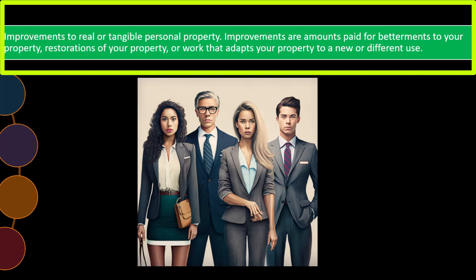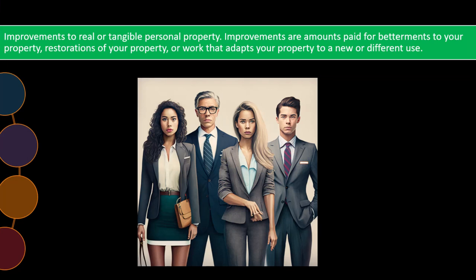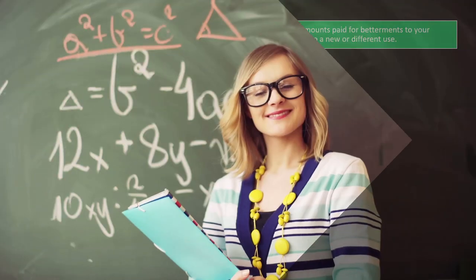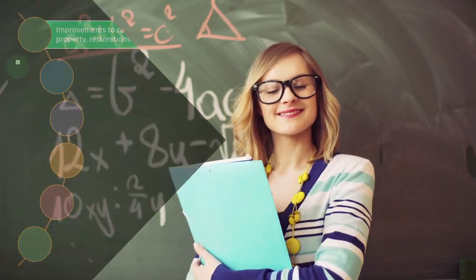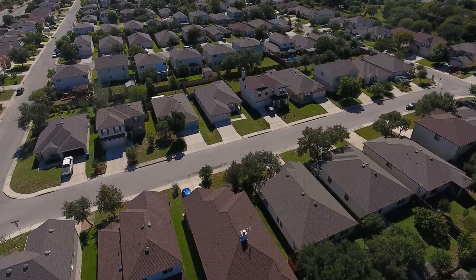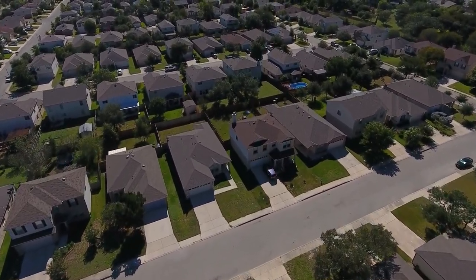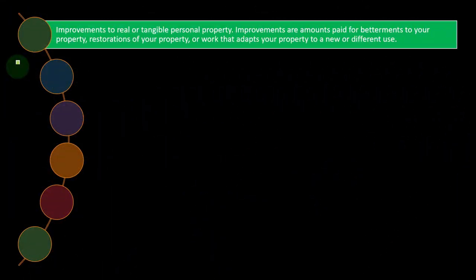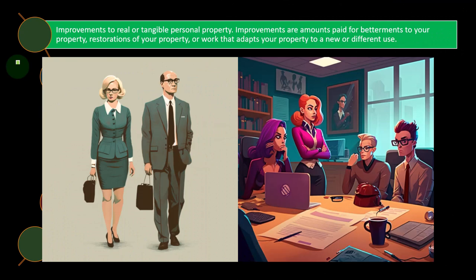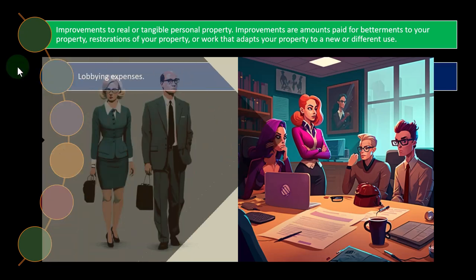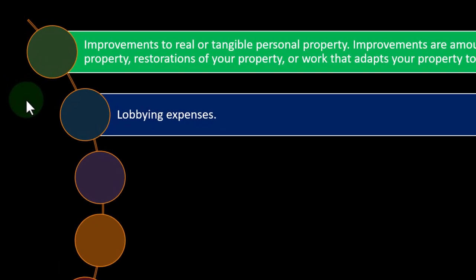Improvements to real or tangible personal property are also non-deductible as a direct expense. Improvements are amounts paid for the betterment, restoration, or adaptation of your property to a new or different use. If it's business property, repairs might be directly deductible, but improvements would need to be put on the books as an asset and deducted over time through depreciation rather than as an immediate expense.